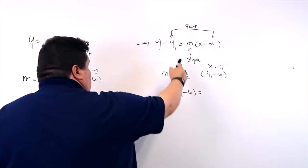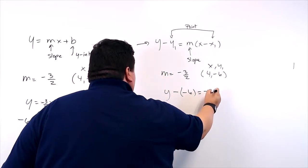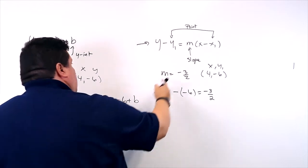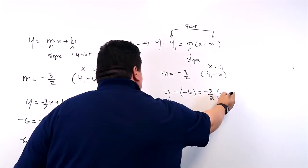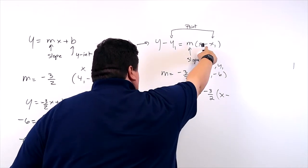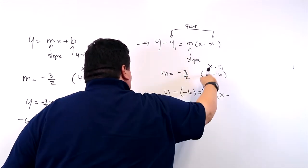So equals m for the slope is negative 3 over 2. And then parentheses. x is just x. Take away x1. x1 is what? 4.